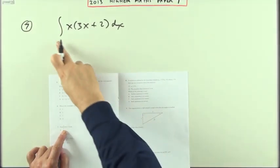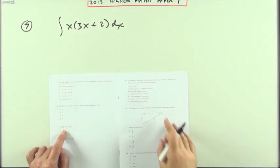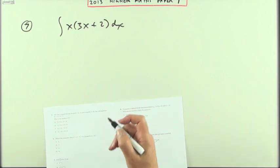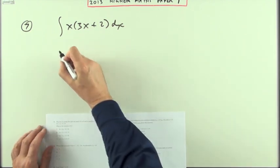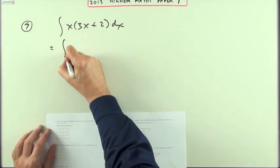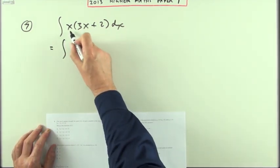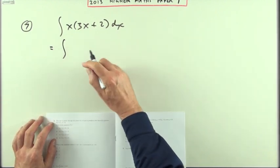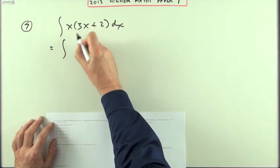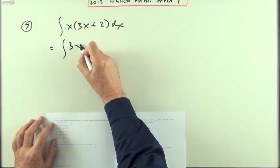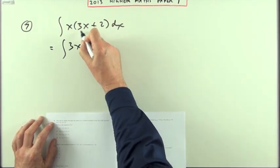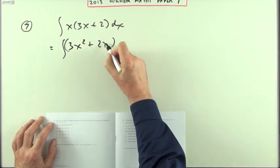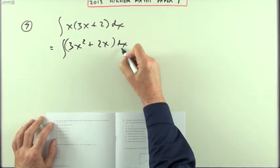Number seven — find this indefinite integral. Just integrate this. It's not ready to go because there's a product here; I'll have to multiply it out into separate terms. So that'll be 3x squared plus 2x dx.